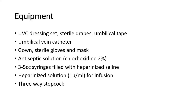This is the list of equipment needed for the procedure, which includes a UVC dressing set, sterile drapes, umbilical tape, umbilical vein catheter, gown, sterile gloves, and mask. Antiseptic solutions such as chlorhexidine 2%, but use diluted chlorhexidine 1 to 200 in preterm babies. Also needed are 3 to 5 cc syringes filled with heparinized saline, heparinized solution for infusion, and a three-way stopcock.